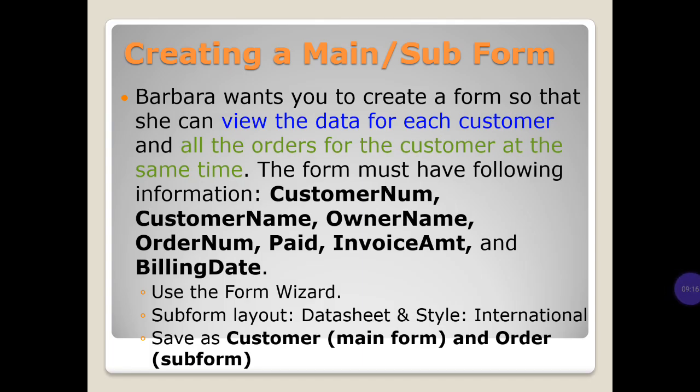Creating a main and sub form: Barbara wants you to create a form so she can view the data for each customer and all the orders for that customer at the same time. The form must include: customer number, customer name, owner name, order number, paid, invoice amount, and billing date. Use the Form Wizard with sub form layout, datasheet style international.